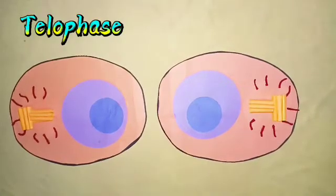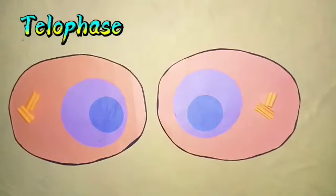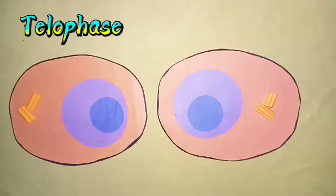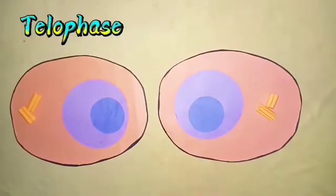Finally, these are now the two identical daughter cells, which are haploid. This is cell 1 and this is cell 2. So that's the cell division called mitosis. Next, I'm going to show to you the cell division called meiosis.